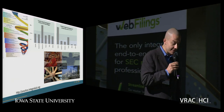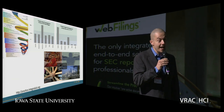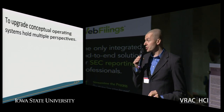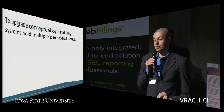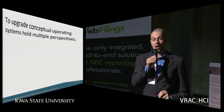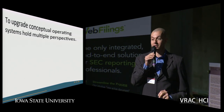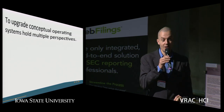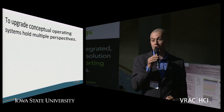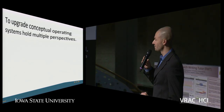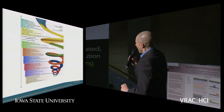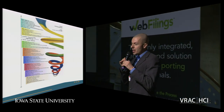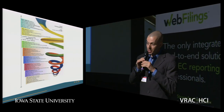Spiral Dynamics is essentially a social developmental model. This social developmental model allows you to upgrade your conceptual understanding so you can hold multiple perspectives. When you hold multiple perspectives, you can do more with more people. Don Beck created Spiral Dynamics as a social development model — it's mainly used in management.